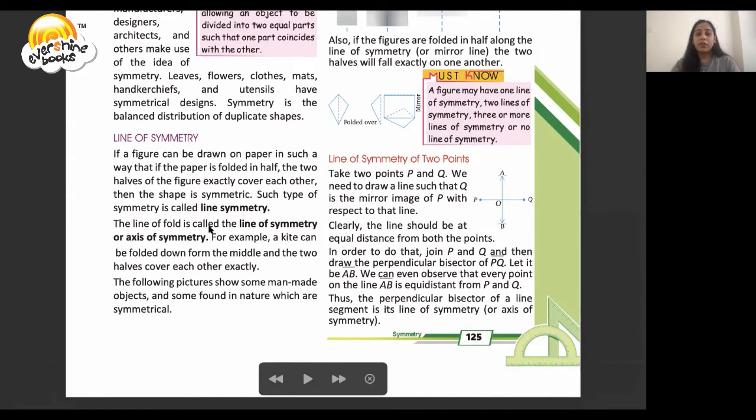The line of fold is called the line of symmetry or axis of symmetry. For example, a kite can be folded down from the middle and the two halves cover each other. If we draw a figure from midpoint to midpoint to fold it, the other half exactly covers the other one. This is the line of symmetry. The following pictures show man-made objects and some found in nature which are symmetrical.